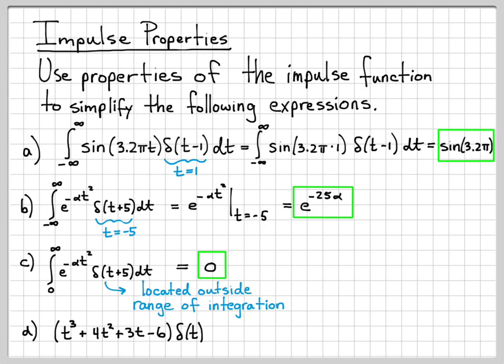So in this problem, I've chosen this polynomial in t. So it is t³ + 4t² + 3t - 6. And I am multiplying it by the impulse δ(t). We talked previously what happens.